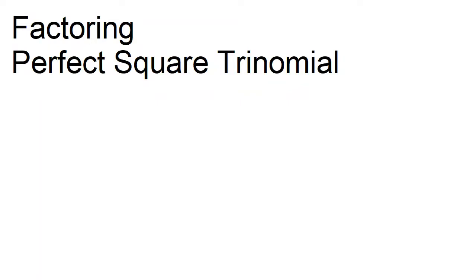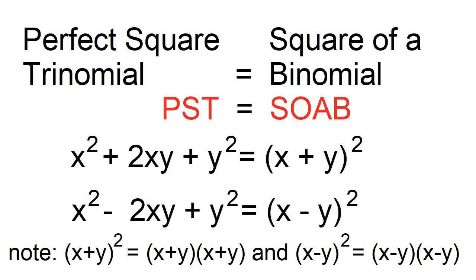Factoring perfect square trinomials. A perfect square trinomial, when factored, is a square of a binomial. A perfect square trinomial is of the form x squared plus 2xy plus y squared, or x squared minus 2xy plus y squared.